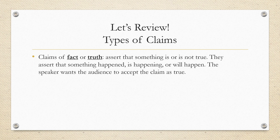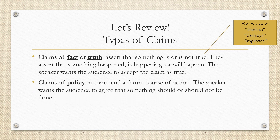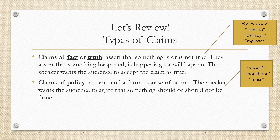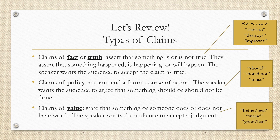First, we have claims of fact or truth — these assert that something is or is not true, that something happened, is happening, or will happen, and the speaker wants the audience to accept the claim as true. You may notice words like is, causes, leads to, destroys, or improves. Claims of policy recommend a future course of action — the speaker wants the audience to agree that something should or should not be done, and you may hear words like should, should not, or must. Claims of value state that something or someone does or does not have worth — the speaker wants the audience to accept their judgment. You may find words like better, best, worse, good, or bad in claims of value.